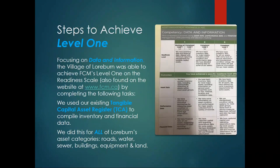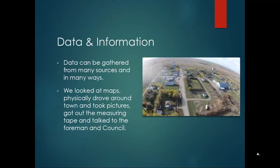We used our existing tangible capital asset register to compile inventory and financial data for all of Lorburn's asset categories: roads, water, sewer, buildings, equipment, and land. Data can be gathered from many sources and in many ways. We are quite small — 106 people, about 120 kilometers southwest of Saskatoon. We went and looked at maps, physically drove around our village, took pictures, got out the measuring tape, talked to council, and compiled all that information into Excel spreadsheets.